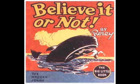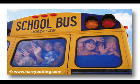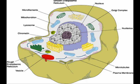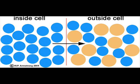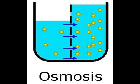Believe it or not, this same thing happens on a microscopic level. Instead of students, you have water molecules. Instead of buses, you have cells. Water molecules will exit and board cells until a balance is reached between the cells. This balance of water molecules is called an equilibrium. This process of balancing water molecules between the cells is called osmosis.